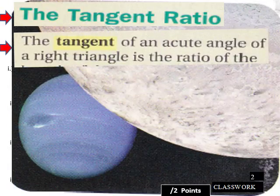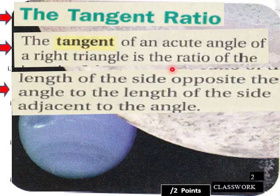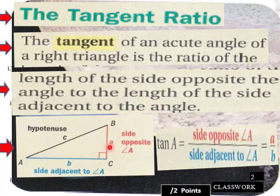So in this situation here, the tangent of an acute angle of a right triangle is a ratio of the length of the side opposite the angle to the length of the side adjacent to the angle. We're going tan A, which is here. Here's angle A. Tan A would be opposite over adjacent. Here's your ratio set up over here. Opposite A over adjacent A equals A over B.